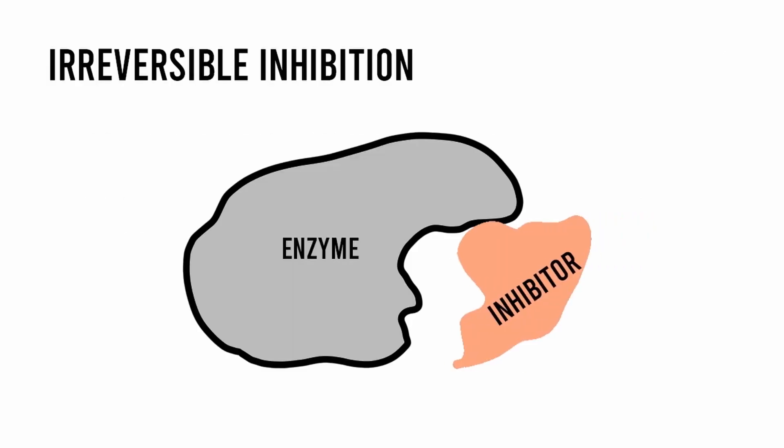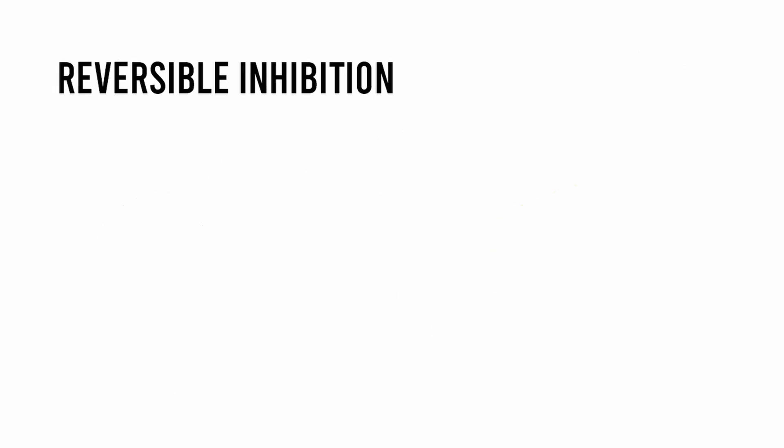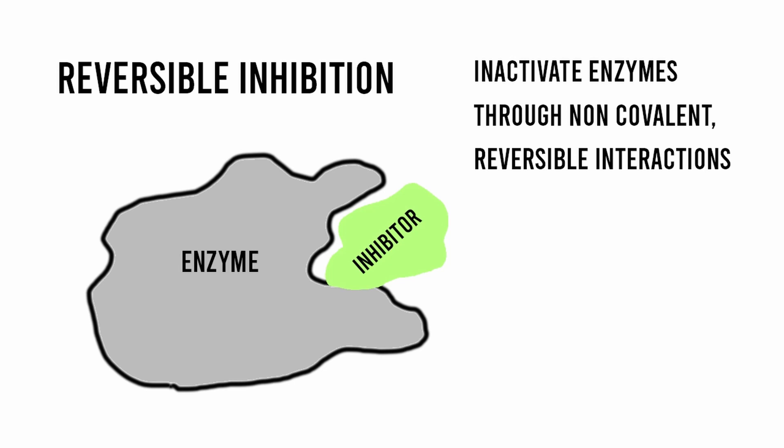Irreversible inhibition occurs when an inhibitor irreversibly inactivates an enzyme by covalently bonding to groups such as amino groups on the active site. On the other hand, reversible inhibitors inactivate enzymes through non-covalent reversible interactions.